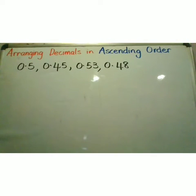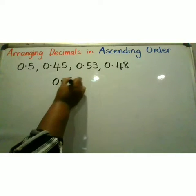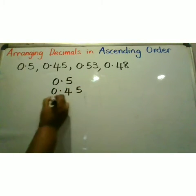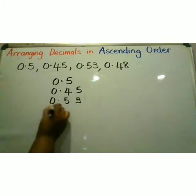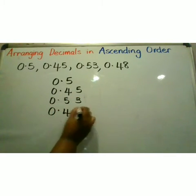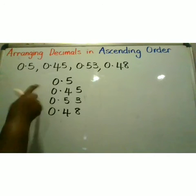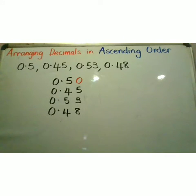First, we must write our decimal fractions vertically. And remember, while writing, you put them digit under digit as if placing them in a place value chart. All my decimal fractions are to hundredths, except my first decimal fraction. So I put a zero as a place value holder because I want all of them to hundredths.